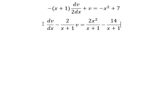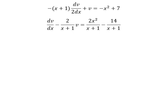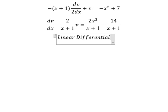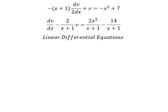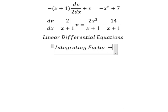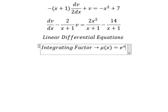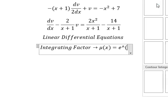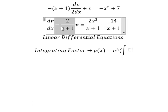Next we divide both sides by negative x plus one over two. Now we have v and the first derivative of v — this is a linear differential equation. So we need to find the integrating factor mu(x), which is e to the power of the integral. We can see that negative two over x plus one is the coefficient next to v — this is used for the integrating factor.